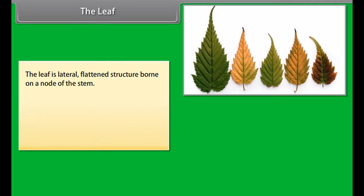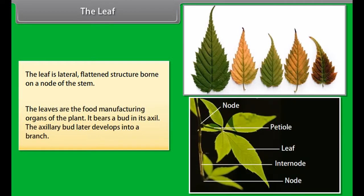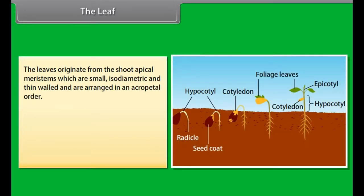The Leaf: The leaf is a lateral, flattened structure borne on a node of the stem. The leaves are the food manufacturing organs of the plant. It bears a bud in its axil. The axillary bud later develops into a branch.